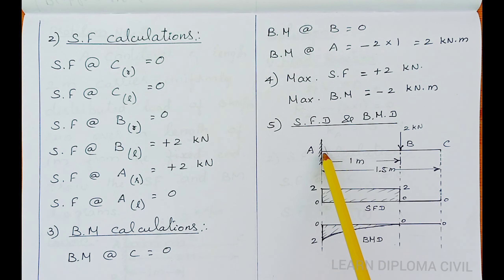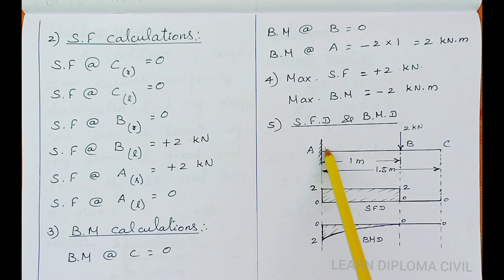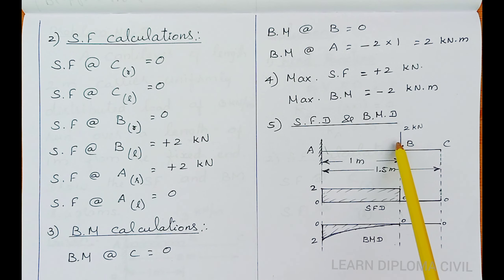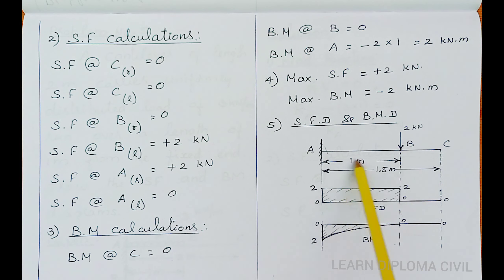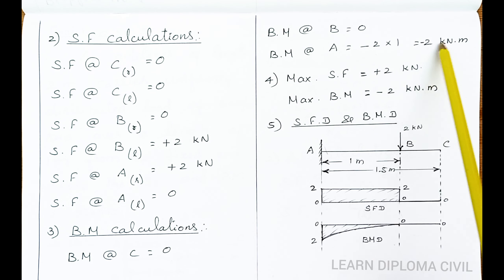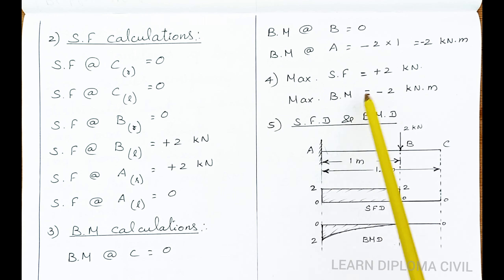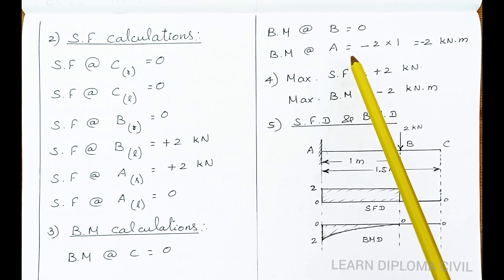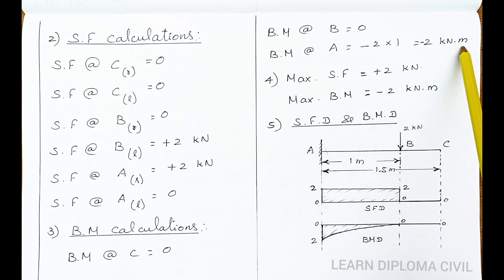Bending moment at A: with a section at A, the right side has a 2 kN downward load. The moment direction is minus. Therefore, bending moment at A is equal to minus 2 multiplied by the distance of 1 meter, that is minus 2 into 1, equal to minus 2 kNm. The maximum shear force is 2 kN and maximum bending moment is minus 2 kNm.